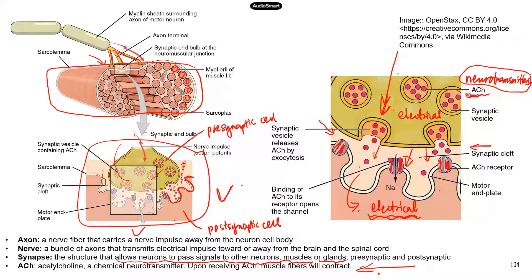This is how your brain can consciously control muscle contraction and generate movement. This is a complicated process — you may need to read the text a few times or watch videos to understand. If you still have any questions, just let me know.